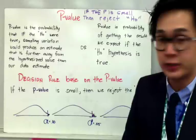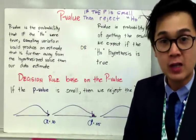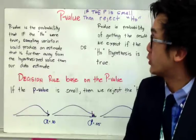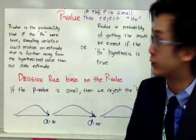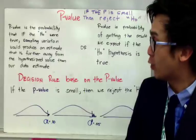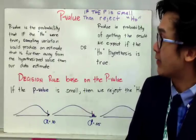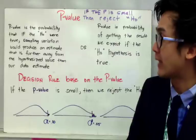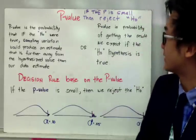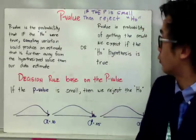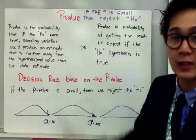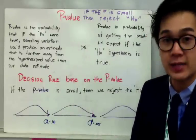Before the first example, let's talk about the p-value quickly. The basic rule in hypothesis testing is: if the p-value is small, then you reject your null. To reject the null, we need to perform a series of steps to find this p-value. By formal definition, the p-value is the probability that if the null hypothesis were true, sampling variation would produce an estimate further away from the hypothesized value than our data estimate — in layman's terms, the probability of getting the result we expect if the null hypothesis is true.